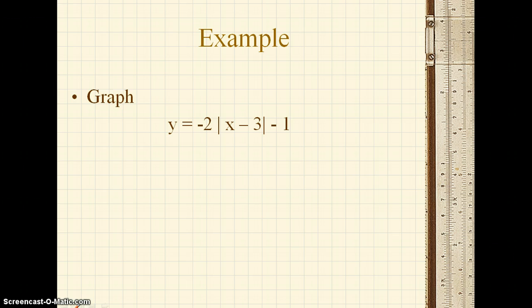So the example that we're going to graph is y is equal to negative 2 times the absolute value of x minus 3 minus 1. The first things that we need to consider are what shape does absolute value make, how to find the vertex, and then how the negative 2 slope affects that.